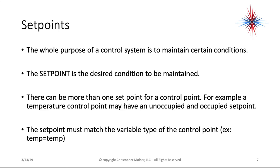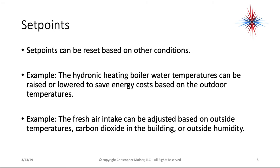Set points represent the desired condition to be maintained. The set point is the desired condition, and there can be more than one set point for a control point — for example, an unoccupied and an occupied set point. The set point must match the variable type of the control point. Set points can also be reset based on other conditions, such as hydronic heating boiler water temperatures raised or lowered based on outside temperature, or fresh air intake adjusted based on outdoor temperature, CO2, and humidity.